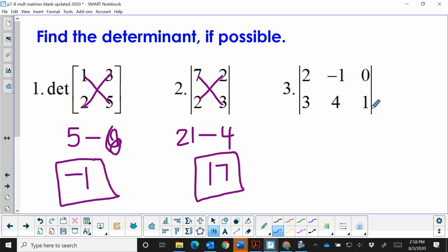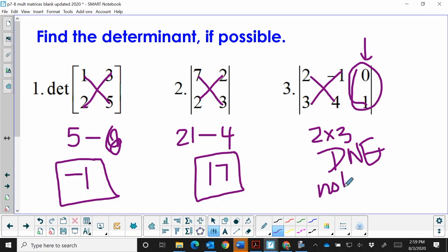Now let's look at the third one. This matrix is a two by three, so I don't have an a and a d and a b and a c because I have this whole other column over here. So this one does not exist. It's not possible. You could even put 'not possible.' So when you don't get a square, you can just stop and say, 'Hey, that one doesn't have a determinant.'